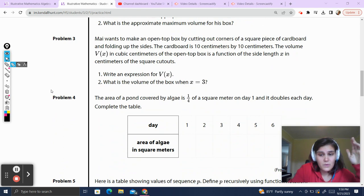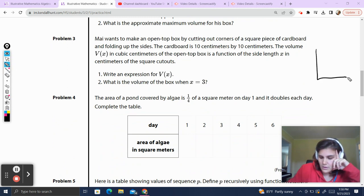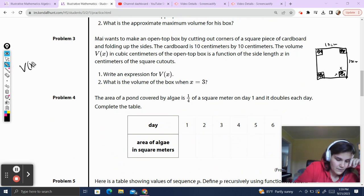Let's go on to the next question. Now if you want to pause this video in between any of these, I recommend it so you can go over and make sure these make sense. May wants to make an open top box cutting out corners of a square piece of cardboard. So her cardboard's a square. The cardboard is 10 centimeters by 10 centimeters. So 10 by 10.